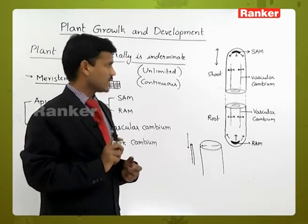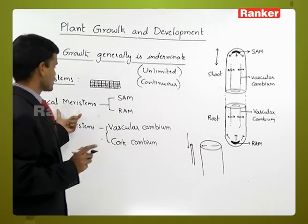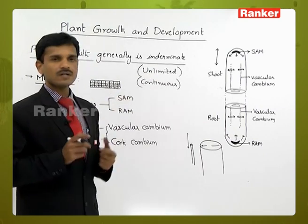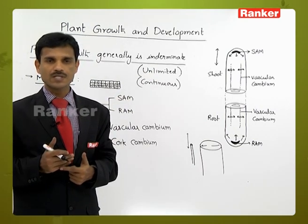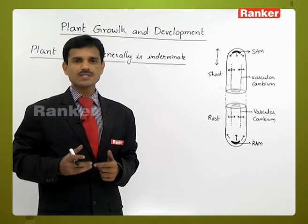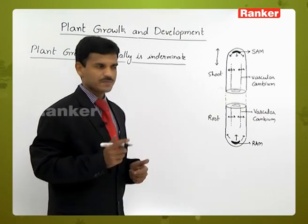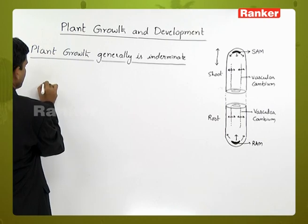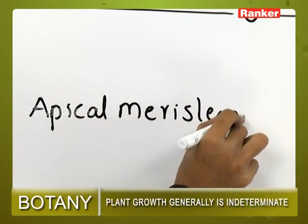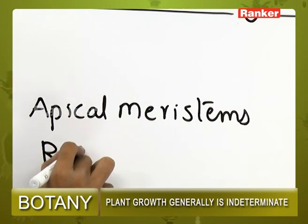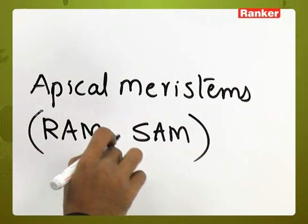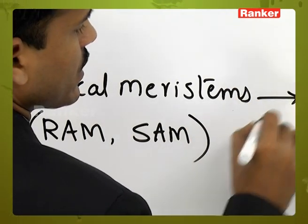Growth is of two types: linear and transverse. Growth is due to the meristems. Since meristems are present only in plants, the growth in plants is unlimited and continuous. New tissues are continuously produced, so indeterminate or unlimited growth is observed in plants throughout their life. This is due to the meristems — root apical meristems and shoot apical meristems — which are responsible for linear growth.